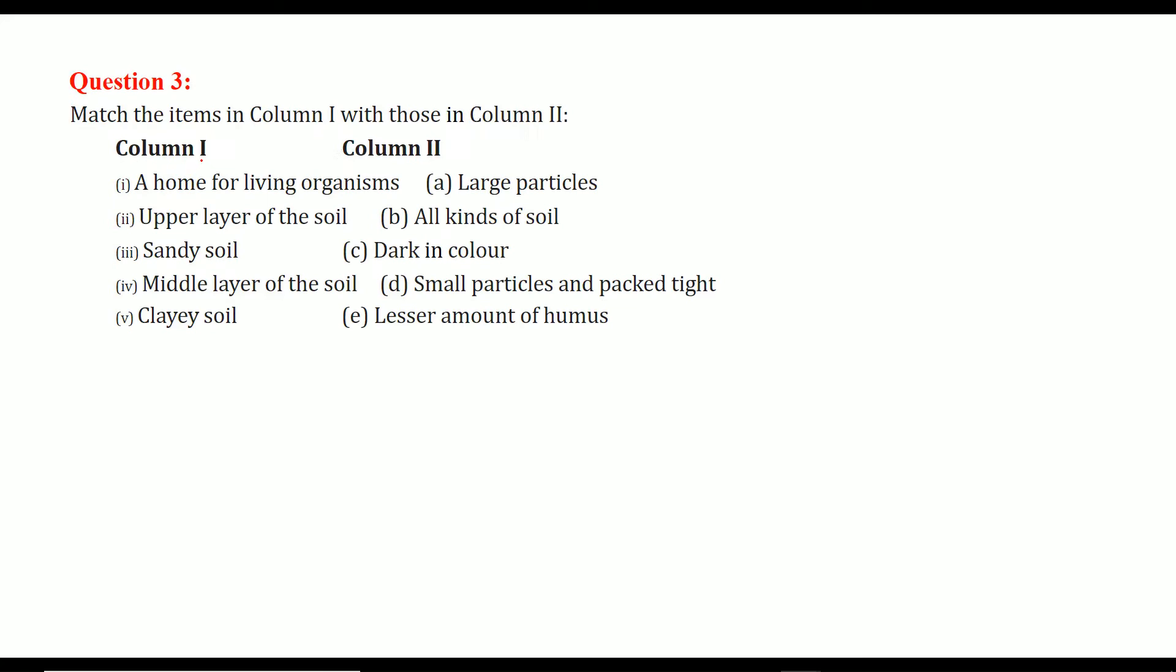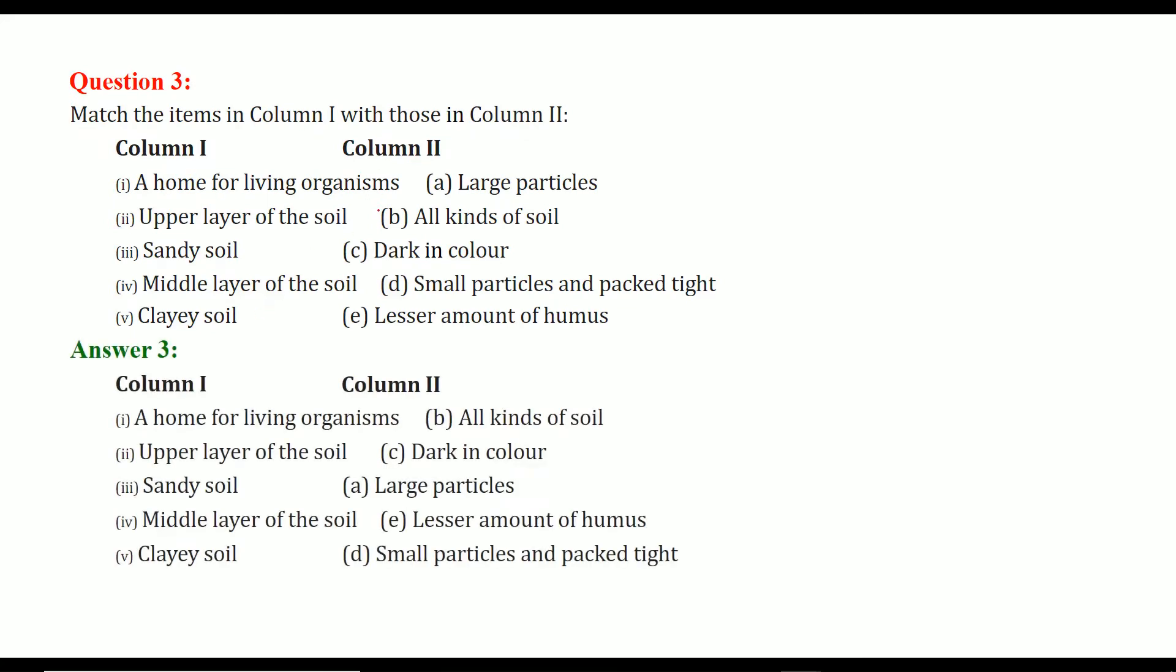We have to match one with two columns. So home of living organisms is all kind of soil. Upper layer of the soil is dark in color. The sandy soil has large particles. The middle layer of the soil has a lesser amount of humus and clay soil the smallest particles and packed tight.